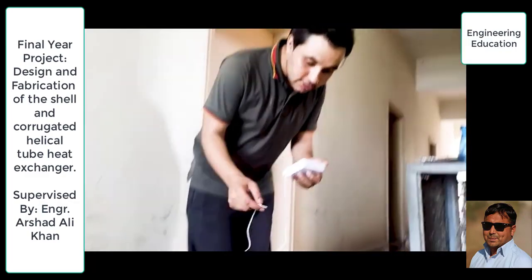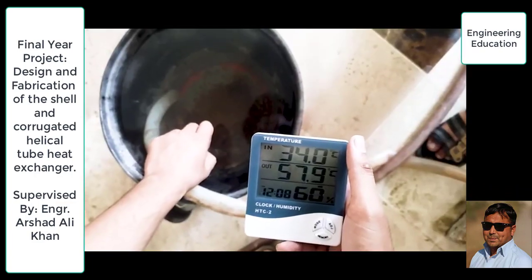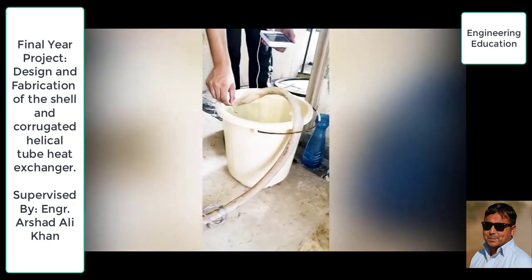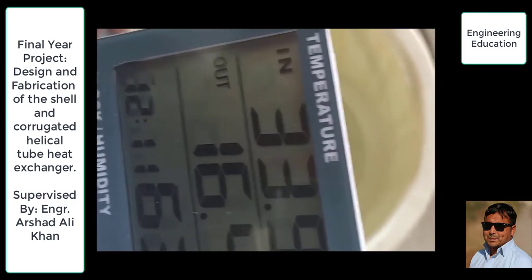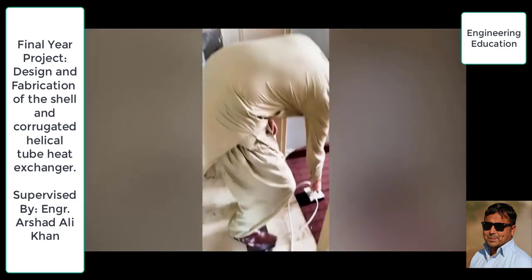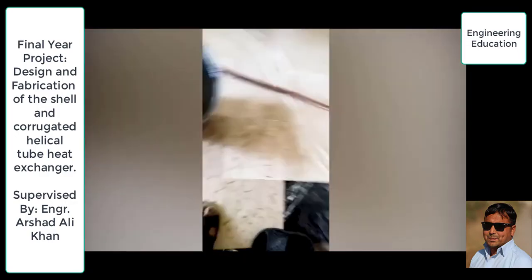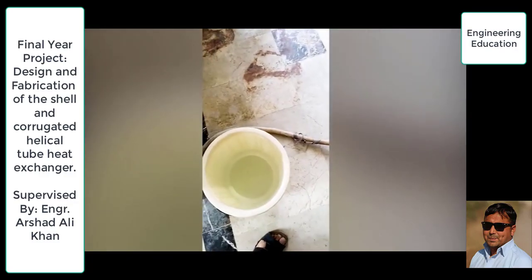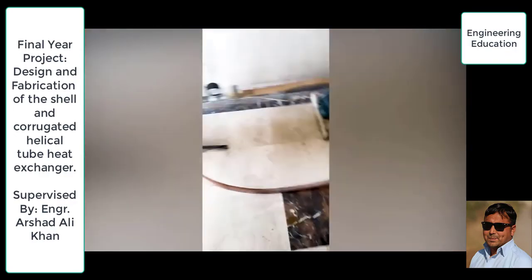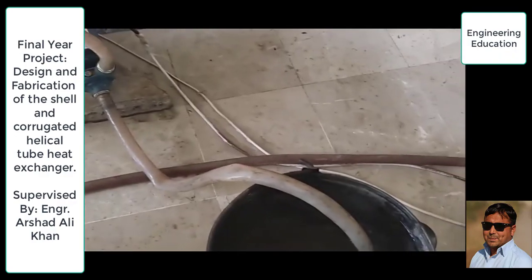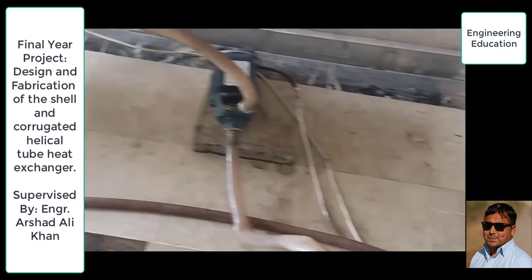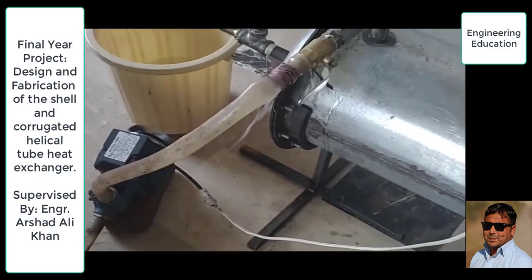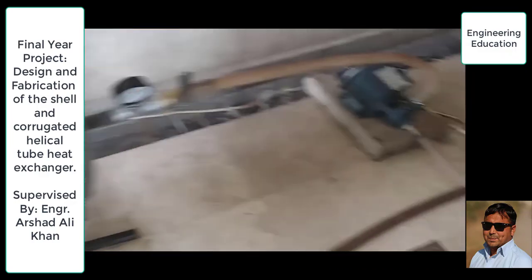We are going to take the temperature at the inlet and outlet. The hot water inlet temperature is 57.9 degrees centigrade, and the inlet temperature of the cold fluid is 16.4 degrees centigrade. Now turning on the pumps — the pumps are working. This is the hot fluid and here we have the cold fluid. Now we are going to find the temperatures at the outlet of the tube and shell.